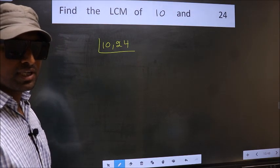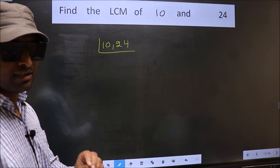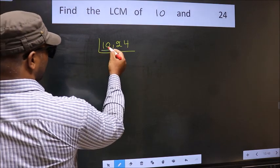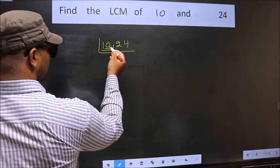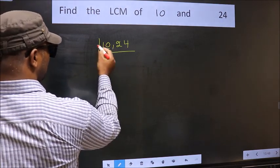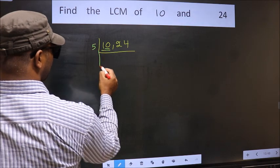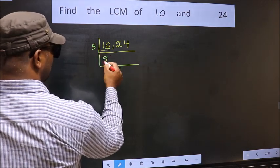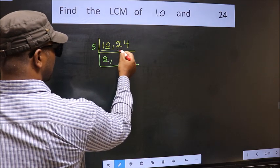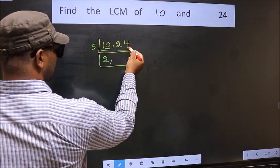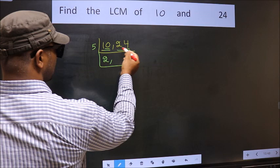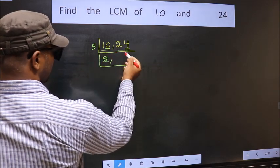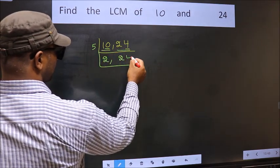Now we should focus on the first number, which is 10 here. For this number, last digit is 0, so you directly take 5. When do we get 10 in the 5 table? 5 times 2 is 10. Now the other number 24 — last digit is neither 0 nor 5, so this number is not divisible by 5. So we write it down as it is.